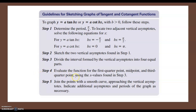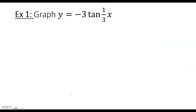Then you evaluate the functions — you can use values from the original tangent and cotangent function — and then sketch a curve through those points. Let's look at a couple of examples where we walk through all of these steps. First, we want to graph y = -3·tan(x/3).